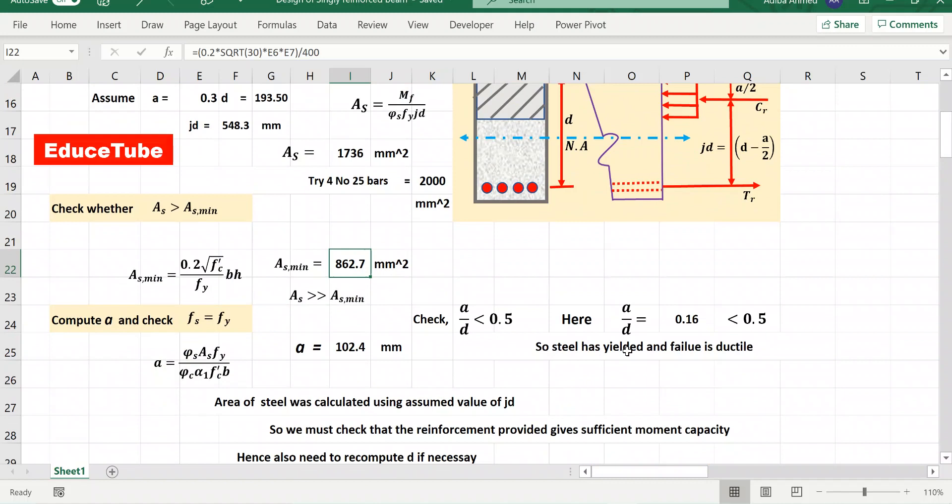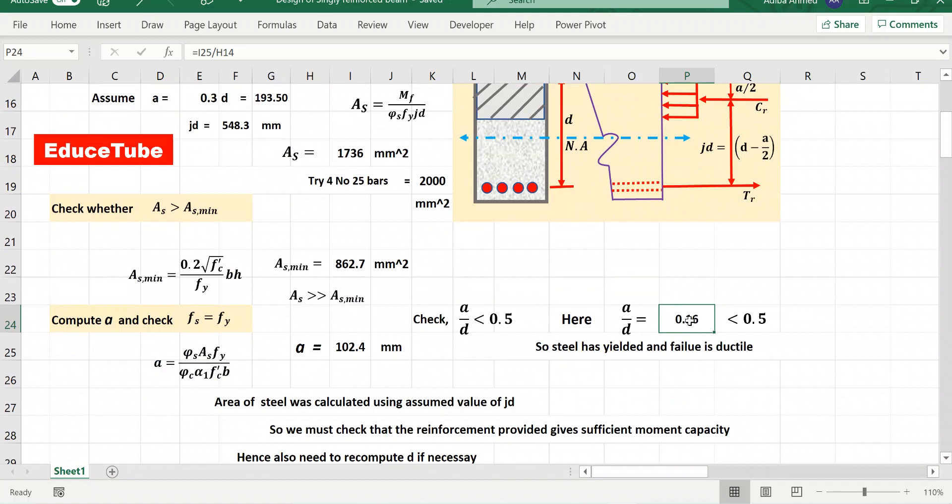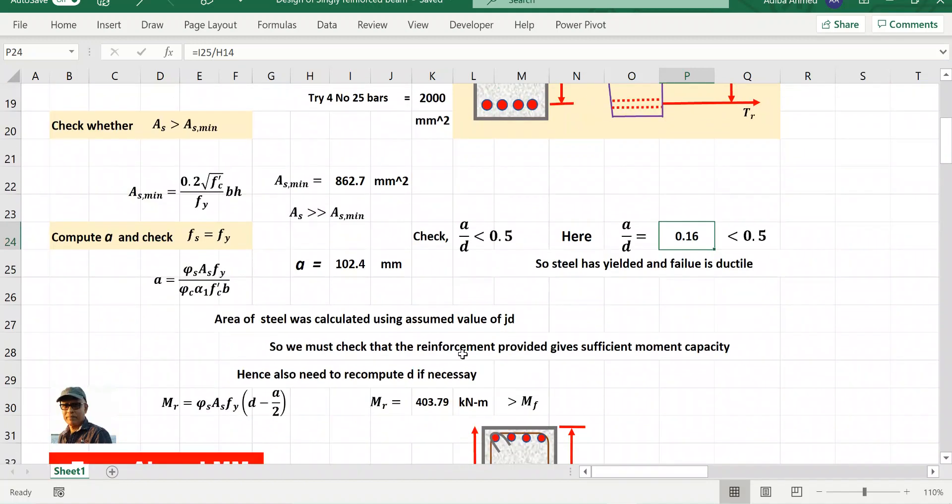So a by d, already a we know, already we calculated here, and d already we got here. So we found 0.16. It is less than 0.5. That is why I have written here failure is ductile.